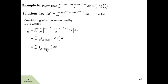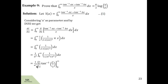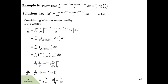Differentiating with respect to a partially: tan inverse ax gives 1 upon 1 plus ax squared, into x. The derivative of tan inverse bx with respect to a is 0 since there is no a in it. This x and x cancel, leaving the integral of 1 upon 1 plus ax squared dx over the limit 0 to infinity. To solve this, we take out a squared, giving 1 by a squared times the integral of 1 upon 1 by a squared plus x squared dx. Using the formula for 1 upon alpha squared plus x squared with alpha equal to 1 by a, after substituting the limits, tan inverse of infinity is pi by 2 and tan inverse of 0 is 0. The a squared and a cancel, so di by da equals pi by 2a.